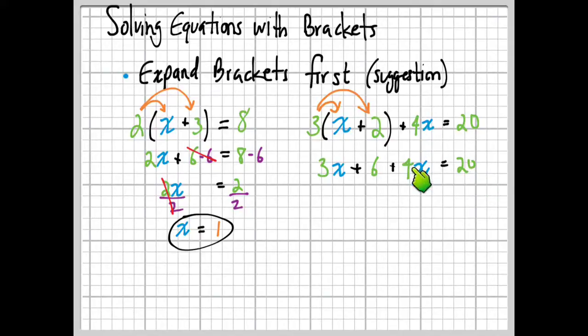Nothing happened with the 4X either—it's just along for the ride. But now we can see that the 3X and the 4X are like terms, and we're going to combine that into a single term, 7X. So we get 7X plus 6 equals 20. Now we're gonna subtract the 6 from both sides. Those 6s on the left disappear and we get 7X equals 14. To get rid of the 7, we divide by 7 on both sides. The 7s cancel and we get X equals 2.